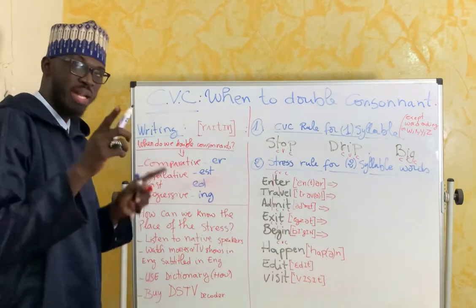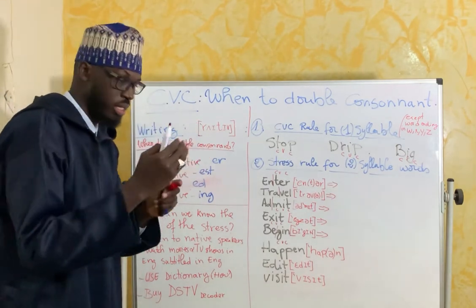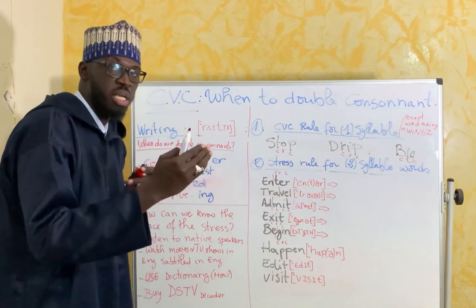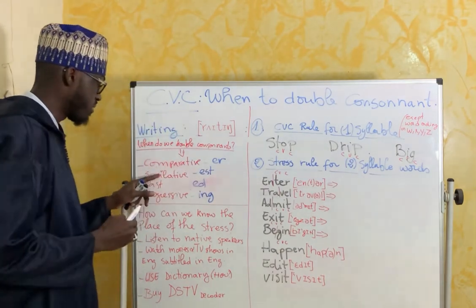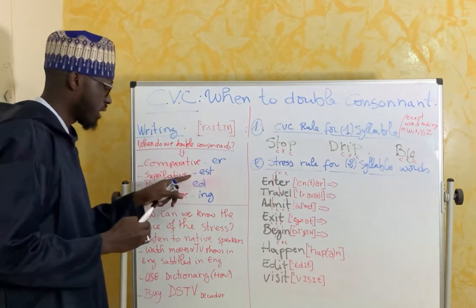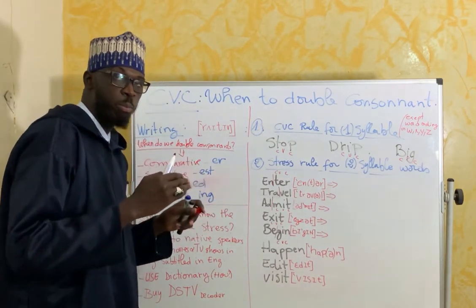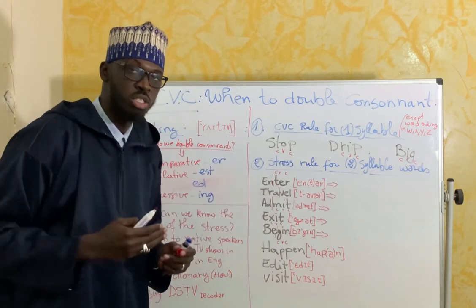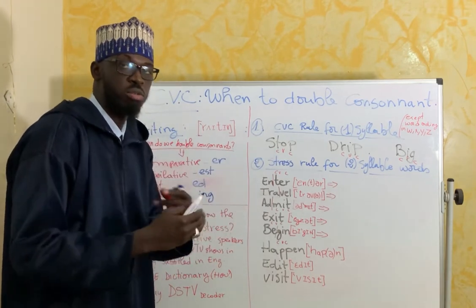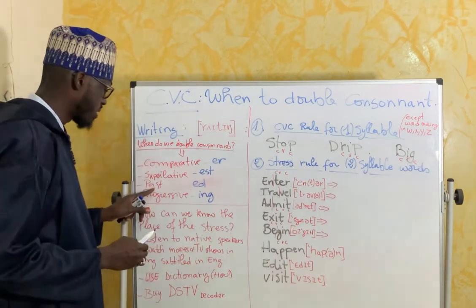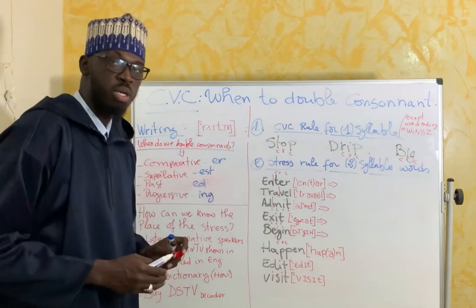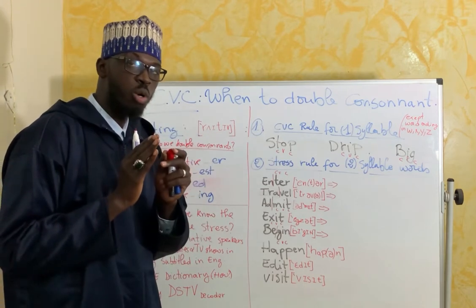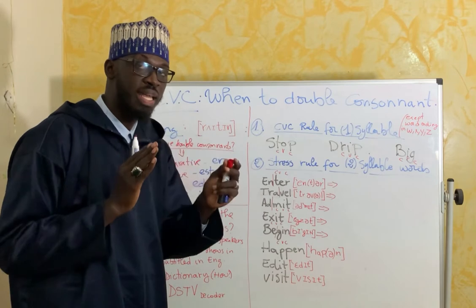The comparative — to compare two things — for example 'bigger': this house is bigger than that house. How do you write that? It takes two G's. And the superlative — comparing one thing to several others — 'the biggest house in the neighborhood.' For the past tense, take 'stop' — we say 'stopped.' We'll also do a lesson on the pronunciation of words ending in -ED.